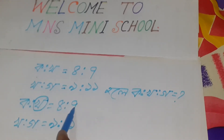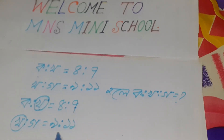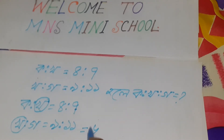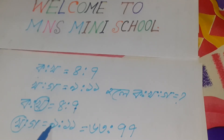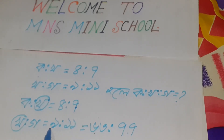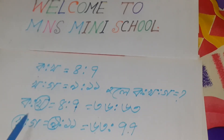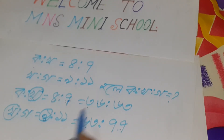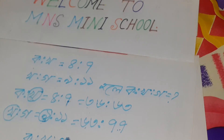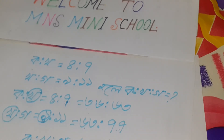ખો શાત રોએ છે, આર એખાને ખો એગાર નાય રોએ છે. ખો જે ગોતો શાત તેલે વીપરીત ગોણ હવે. એ શાત્દી એં શાબગુલે ગોણ તેલે કોતો હલો, શાત્નં પ્રતે ખ્યાલ ક્રો.